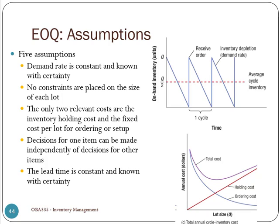Finally, let's look at the assumptions we're making when we calculate EOQ. There are five assumptions we have to make for the EOQ to work. Number one: demand rate is constant and known with certainty. Demand rate is constant meaning the demand is the same across all time — it never goes up or down.